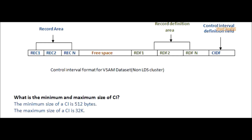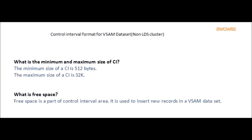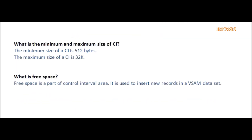Question: What is the minimum and maximum size of Control Interval? Answer: The minimum size of a Control Interval is 512 bytes. The maximum size of a Control Interval is 32 K.